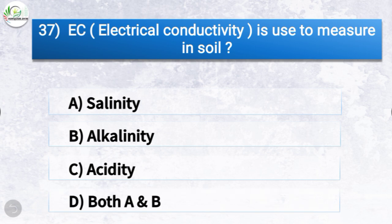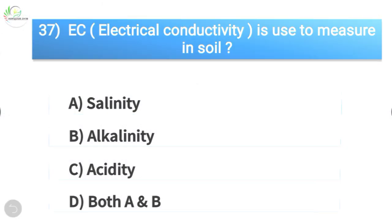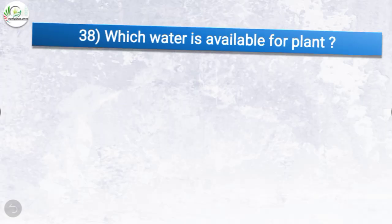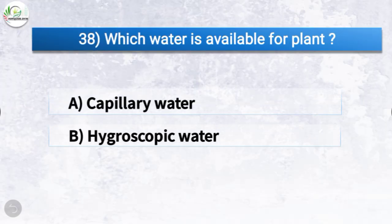Question number thirty-seven: EC or electrical conductivity is used to measure what in soil? The options are salinity, alkalinity, acidity, or both A and B. The correct answer is option A, salinity. So EC is used to measure salinity in soil.